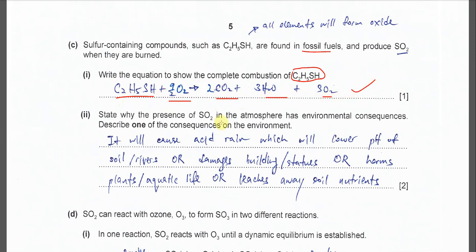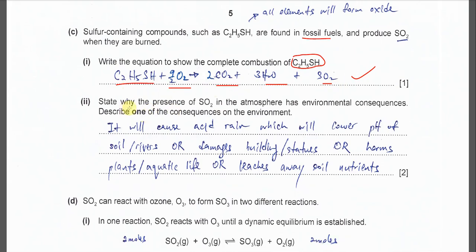Part 2: State why the presence of SO2 in the atmosphere has environmental consequences. Describe one of the consequences on the environment. This one very easy. SO2 after is oxidized it will form SO3. SO3 will form the acid rain. It will cause acid rain which will lower the pH of soil or river or damage building or harms a plant, aquatic life, leach away the soil nutrients. You can choose one.